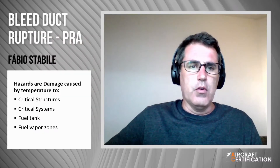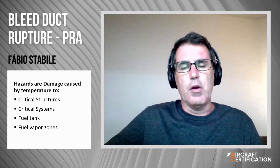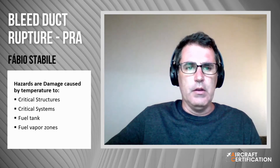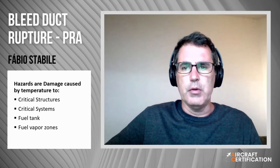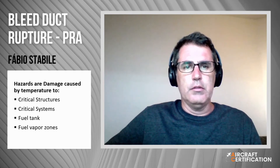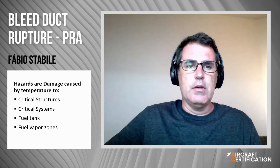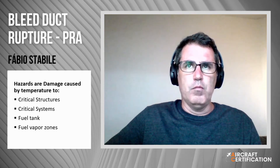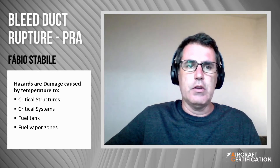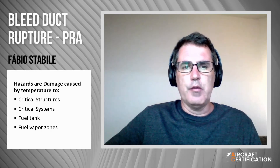For bleed ducts routed near fuel tanks or in flammable fluid zones, there are particular concerns covered by other requirements. For example, ignition inside fuel tank: normal operation or leakage of the bleed duct cannot cause ignition of fuel inside the fuel tank — that is requirement CFR 14, FAR 25.981 A1 and 2. The other requirement covers ignition in fuel vapor zones: the surface temperature of the duct system cannot cause ignition in vapor zones — that is CFR 14, FAR 25.863 A, B, 1, 2 and 3.